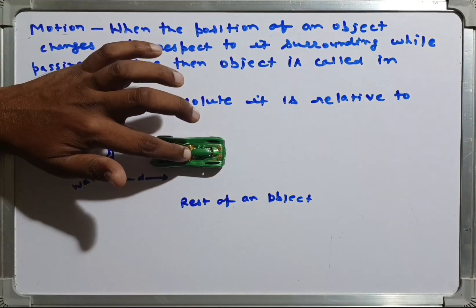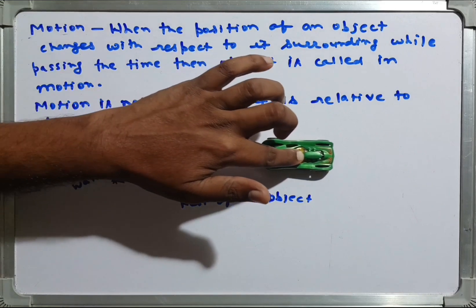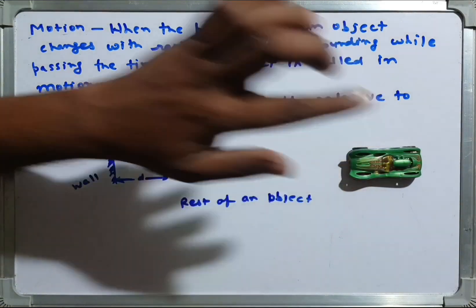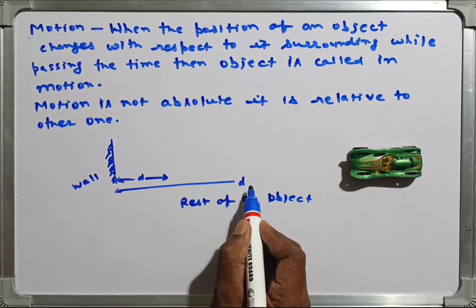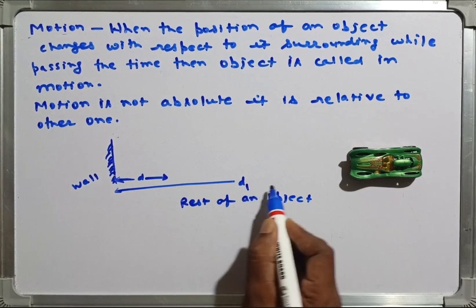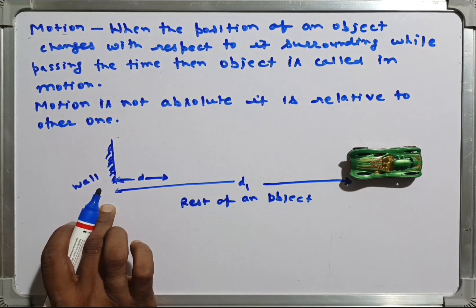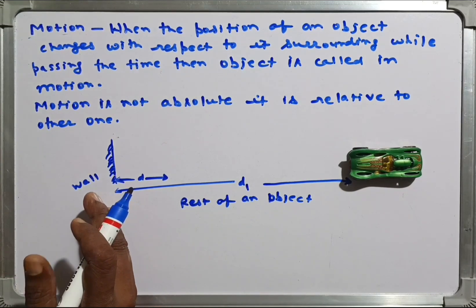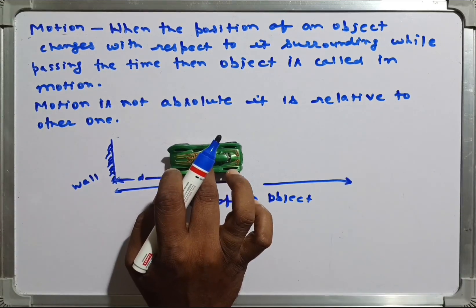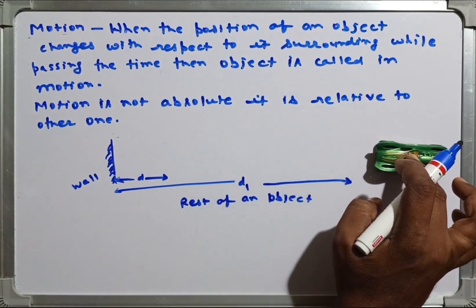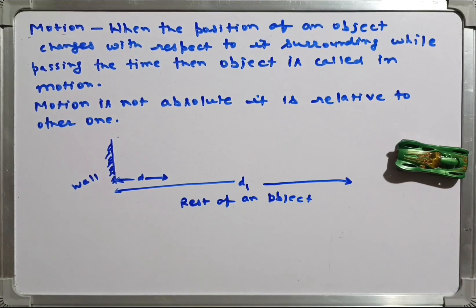Now suppose the car starts moving. What you see is that the position of this car changes from here to here. If we say D1 is the distance traveled by this car from the wall, you can see the position of this car has been changed. So you can say the car has moved — it is in motion. Whenever the position of an object changes with respect to its surroundings while time passes, then the object is called in motion.